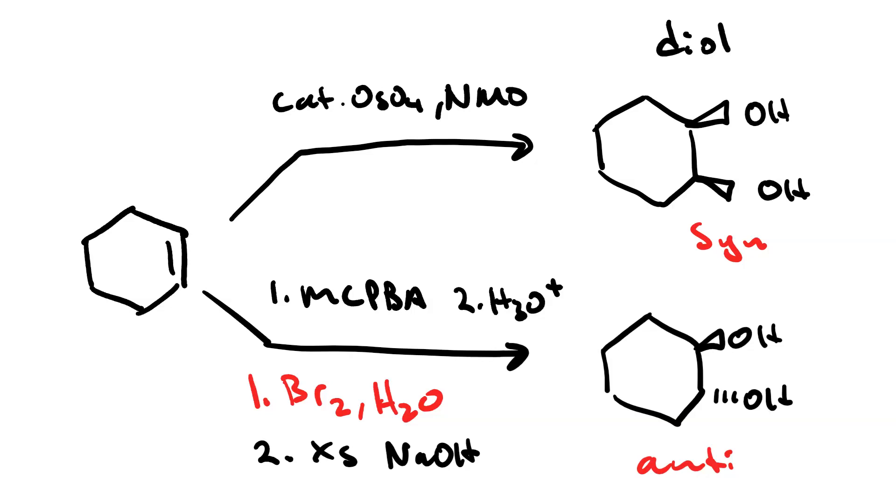To make the halohydrin, you would treat the alkene with bromine or iodine or chlorine in water. So then you'd have anti-addition of a hydroxyl group on one carbon and the vicinal carbon would have the halogen.